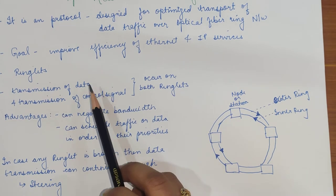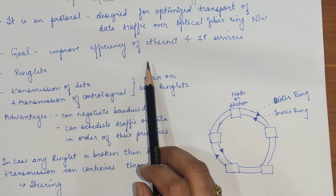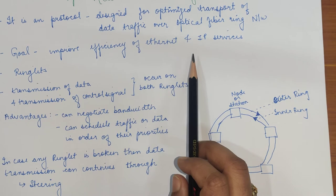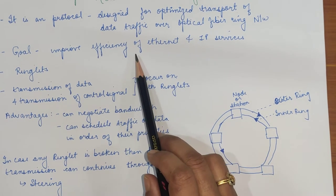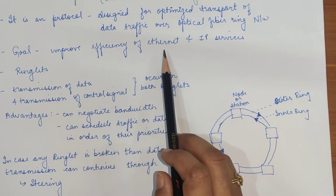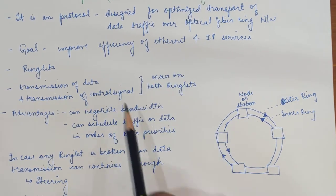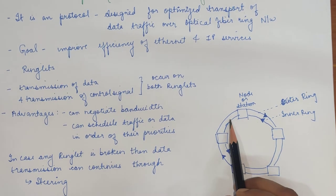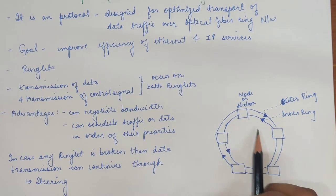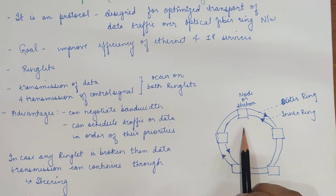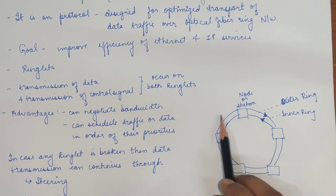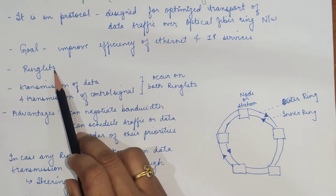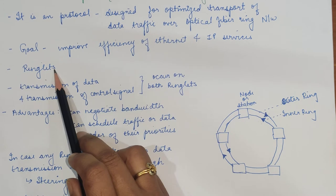The main aim was to reduce traffic or congestion so that the efficiency of Ethernet can be improved. There are two different rings — an inner ring and an outer ring — both rotating in opposite directions. These rings are called ringlets.